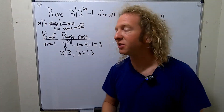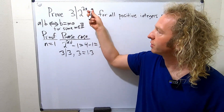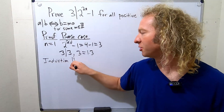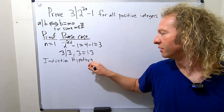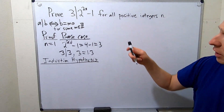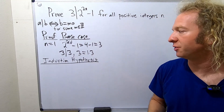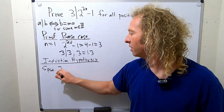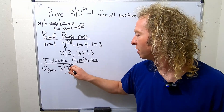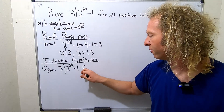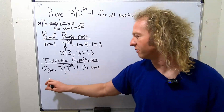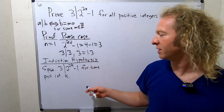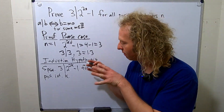The next step is the induction hypothesis. We get to assume that this is true for some positive integer K. Suppose 3 divides 2 to the 2K minus 1 for some positive integer K. Most people can make it this far.